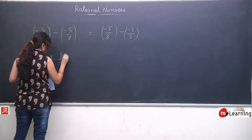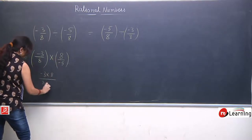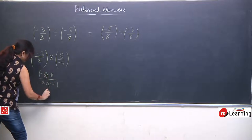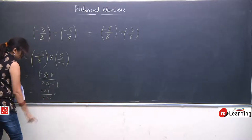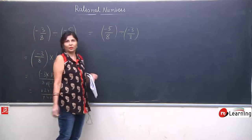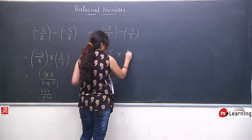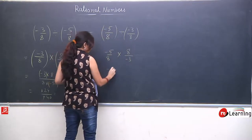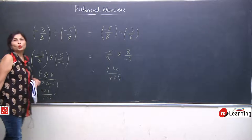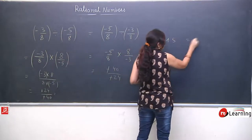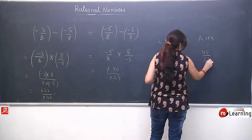We convert divide into multiply — the second term reciprocates. Numerator multiply to numerator: 3 × 8 = 24, minus × 8 × 5 = 40, and minus minus will be cancelled — so LHS is 24 upon 40. RHS: similarly dividing and reciprocating gives minus 5 × 8 upon 8 × 3 = minus 40 upon minus 24, minus minus cancelled, giving 40 upon 24. LHS is 24 upon 40 and RHS is 40 upon 24.